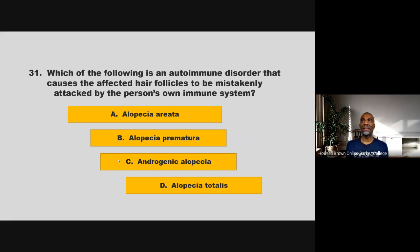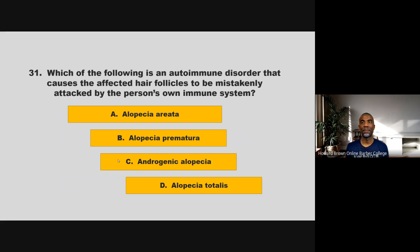Which of the following is an autoimmune disorder that causes the affected hair follicles to be mistakenly attacked by the person's own immune system? Is it alopecia areata, alopecia prematura, androgenic alopecia, or alopecia totalis? If you chose A, alopecia areata, you are correct.